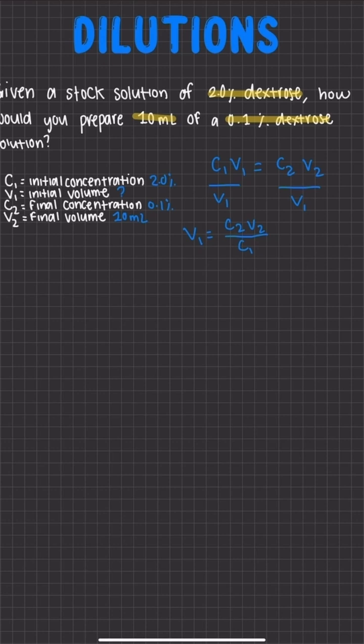So now it's just a matter of plugging in our numbers. So our initial volume is going to be equal to 0.1% times 10 milliliters over 2%. So our percentages are going to cancel out, and we're going to be left with 0.1 times 10 milliliters over 2.